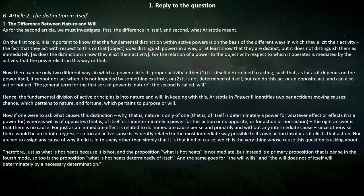There can be only two different ways in which a power elicits its proper activity. Either it is itself determined to acting, such that as far as it depends on the power itself, it cannot not act when it is not impeded by something extrinsic — or it is not determined of itself, but can do this act or an opposite act, and can also act or not act. The general term for the first sort of power is nature, and the second is called will. Hence, the fundamental division of active principles is into nature and will.